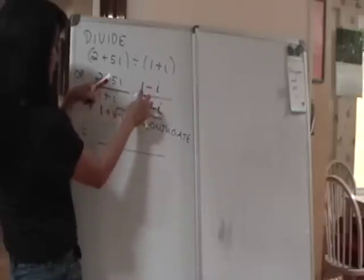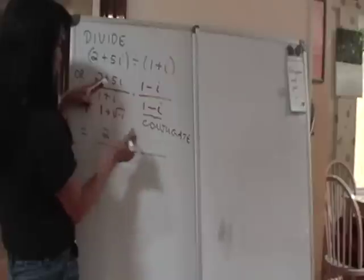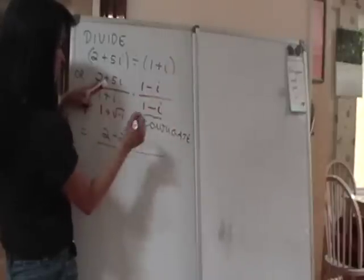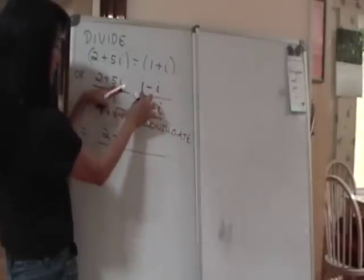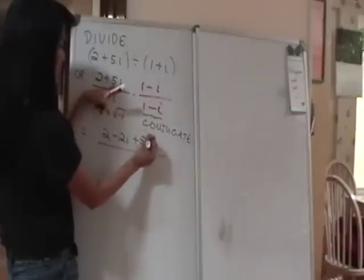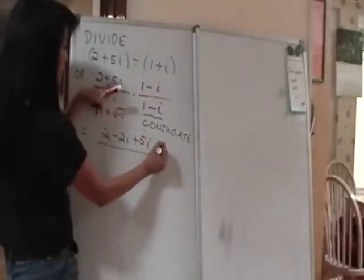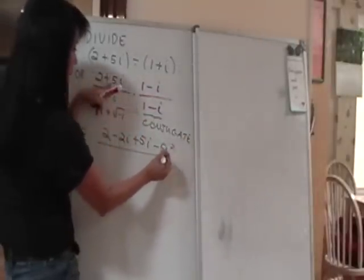2 times 1 is 2. 2 times negative i is negative 2i. 5i times 1 is plus 5i. 5i times negative i is negative 5i squared.